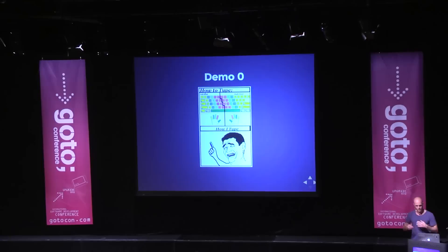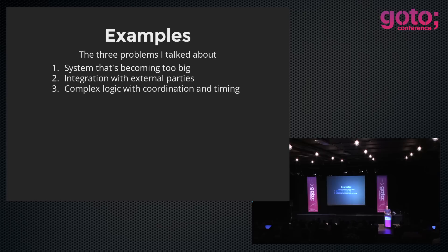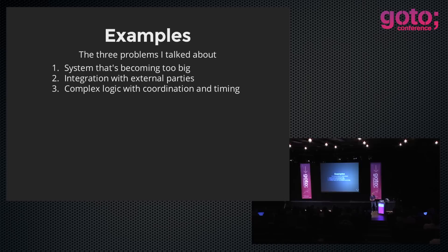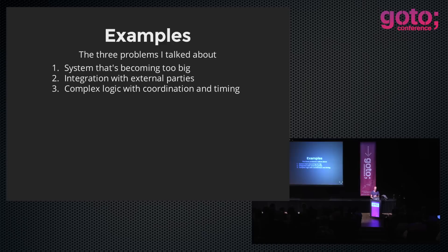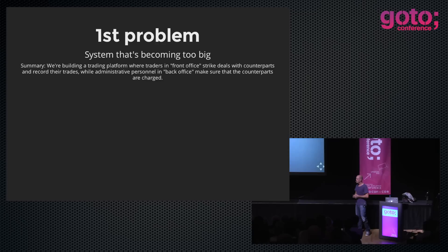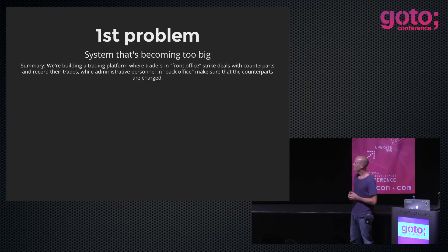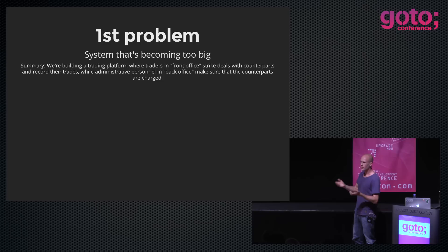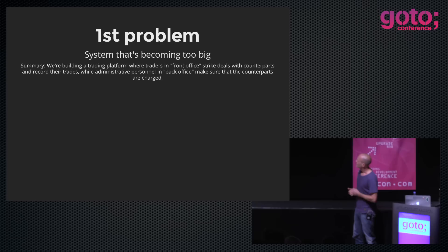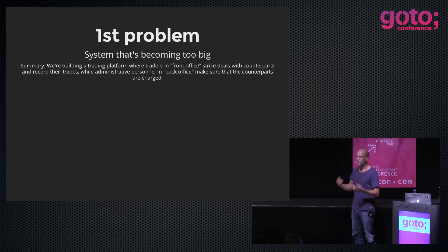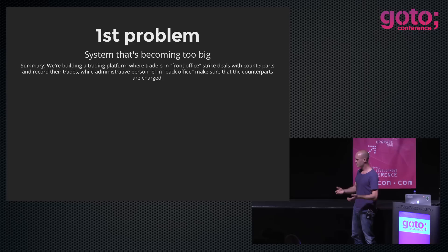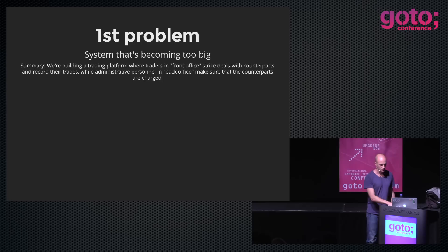That was a very short demo showing how simple it is to get up and running with Rebus. Now back to the three problems. We talked about a system that was becoming too big, integration with external parties, and some complex logic with coordination and timing. The first problem — I've stolen the setting from work at one of our clients at D60 where we're building a trading platform. Imagine traders in front office are striking deals with counterparties, and then administrative personnel in back office make sure those counterparties are charged.